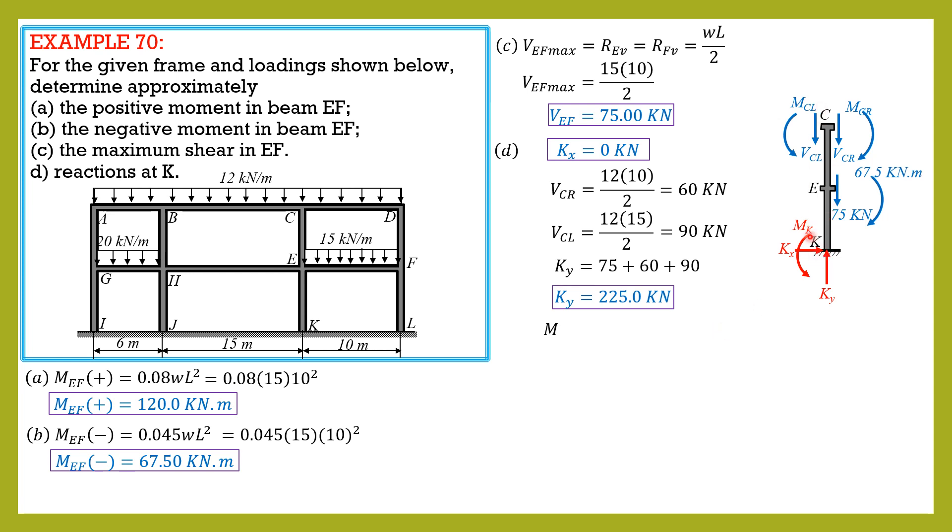Then summation moment about K equals 0, considering this free body diagram. So MsubCR, let's solve for MsubCR: 0.045 times W times 10², here it is 54 kilonewton-meters. While MsubCL is 12 times... no, F is 12 times 0.045 times 12 times 15², and it is equal to 121.5 kilonewton-meters.